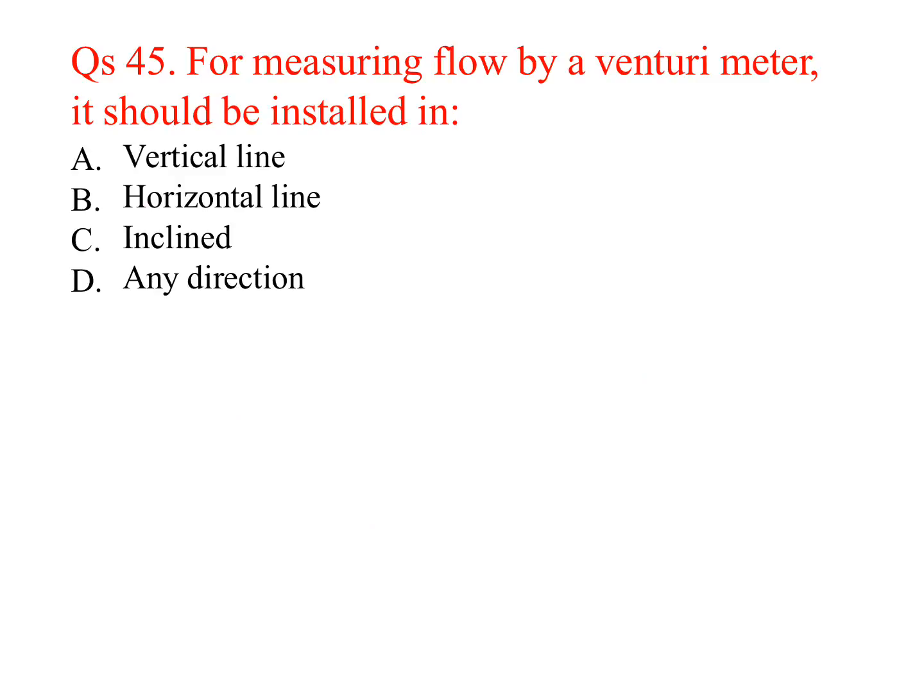For measuring flow by a venturimeter, it should be installed in a vertical line — yes; horizontal line — yes; inclined — yes; any direction — yes. A venturimeter can be installed in any direction.